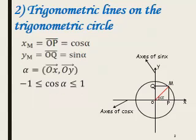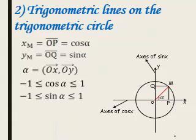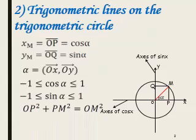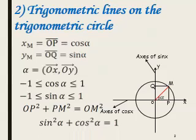You should always know that cosine alpha is between minus 1 and 1, and sine alpha is between minus 1 and 1 also. OP squared plus PM squared is equal to OM squared — this is Pythagoras' theorem. That is why sine squared alpha plus cosine squared alpha equals 1.